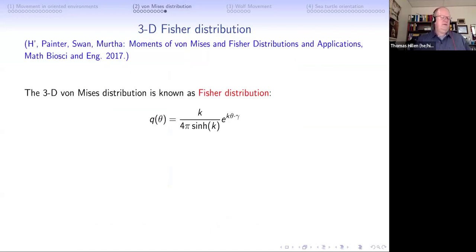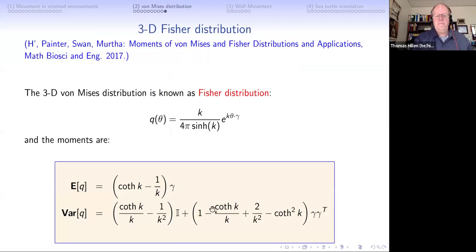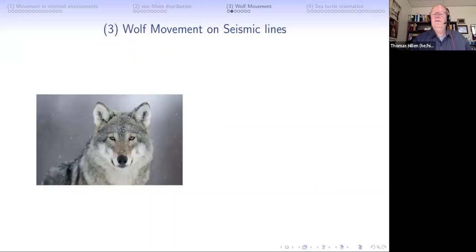A note: for 3D things become much more complicated. The von Mises distribution in 3D is called the Fisher distribution - it has a slightly different formula due to the normalization constant. The variance-covariance matrix in 3D was unknown until we computed it in 2017. We can find formulas for both the expectation - which is the drift velocity - and the variance which is the diffusion coefficient.